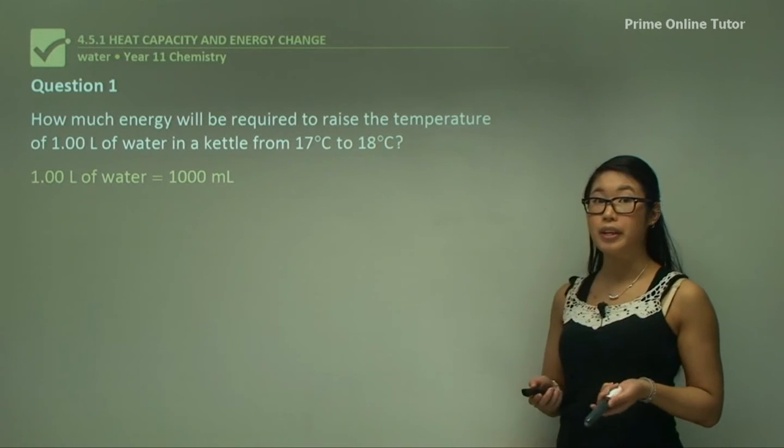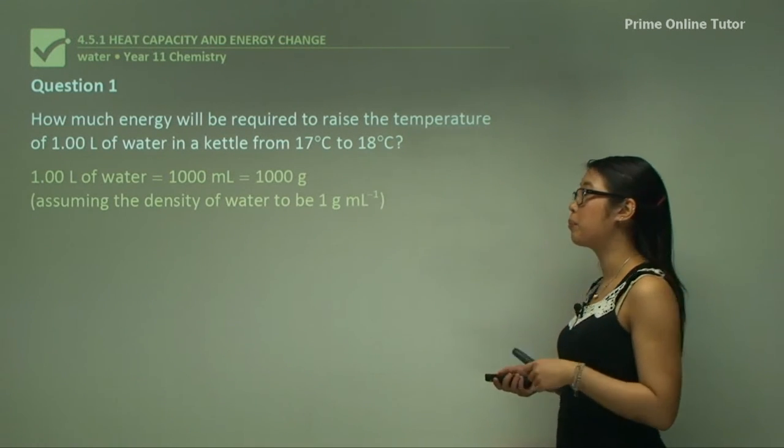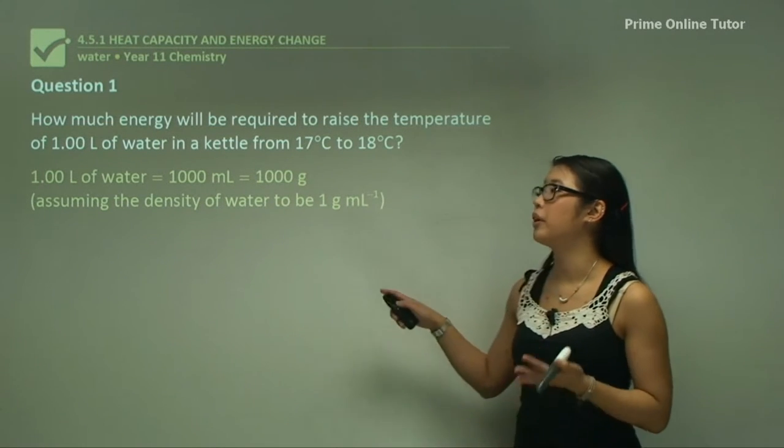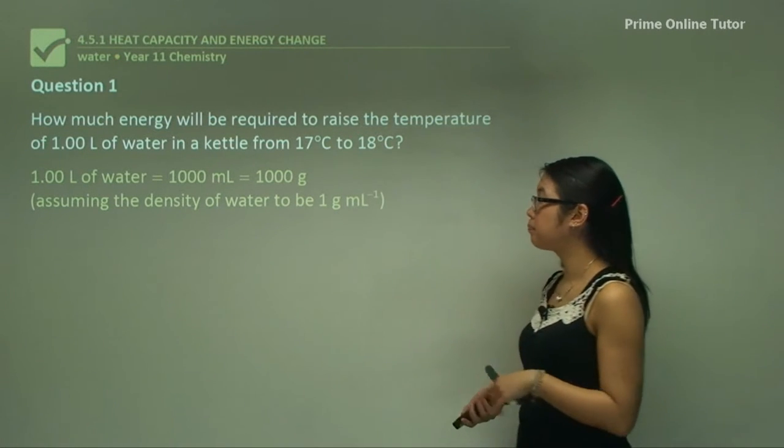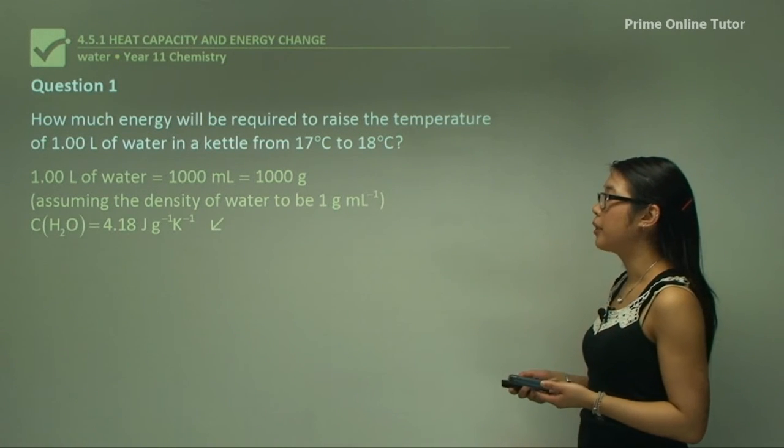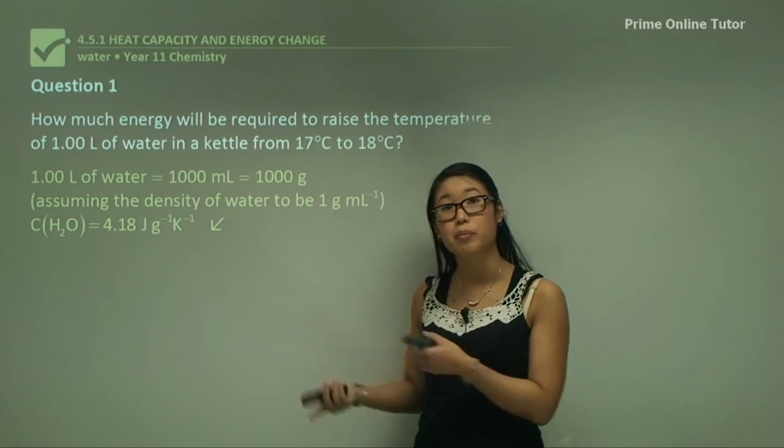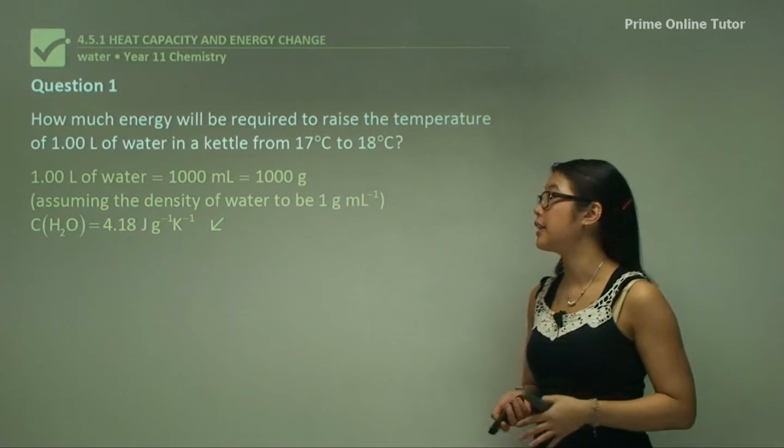One liter of water is one thousand mils, and one thousand mils is pretty close to one thousand grams. We usually assume that one gram of water equals one mil of water. The specific heat capacity of water is 4.18 from our table, and it should be in your tables given in exams.